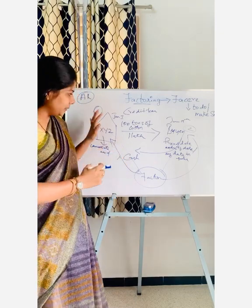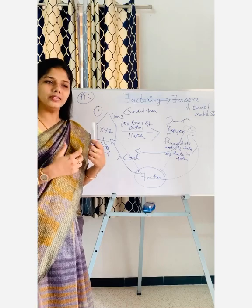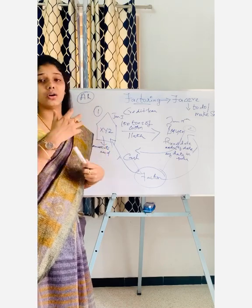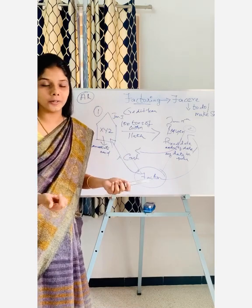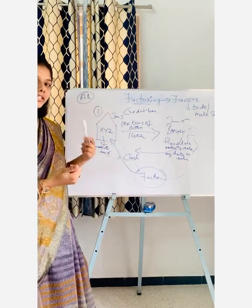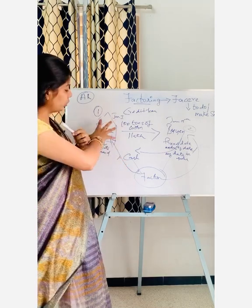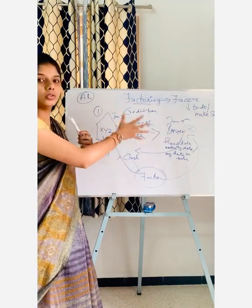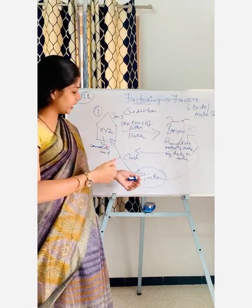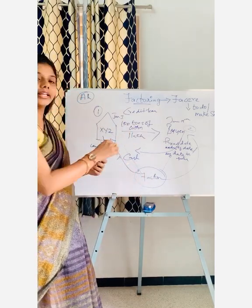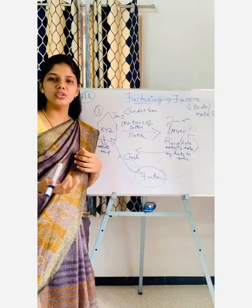So why do companies actually do factoring? The reason is that a company's duty is to sell goods. Most companies are not interested in chasing all their buyers to collect cash, because they have other important work to do. So most companies tend to use this intermediary called the factor. The only duty of the company will be to sell goods, and then the factor — as the intermediary — will help the company collect cash from its buyers.